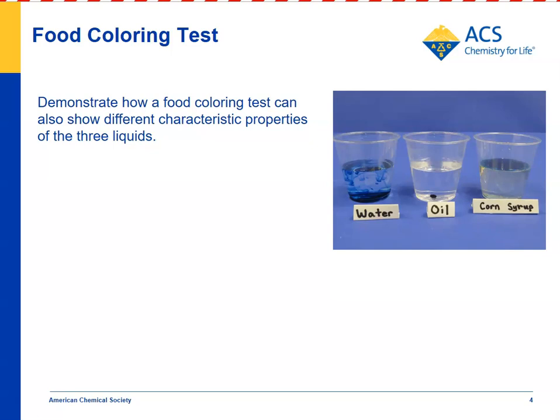In the extend part of the lesson, you can do a demonstration where you take a sample of water, mineral oil, and corn syrup — the same liquids students have been using — and place one drop of food coloring in each one. Students can clearly see that the food coloring interacts differently with each liquid. Since the food coloring is the same in each case, it must be that the liquids are different. The food coloring mixes in easily with water, drops to the bottom without spreading in the oil, and spreads out on the surface of the corn syrup.